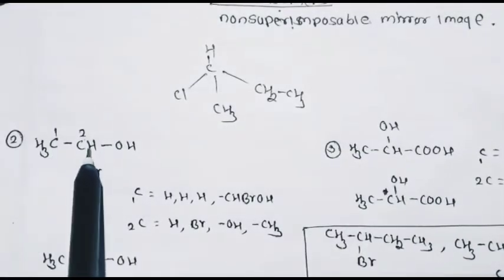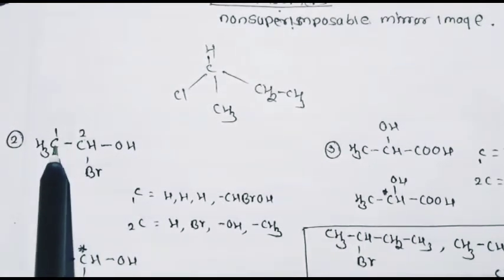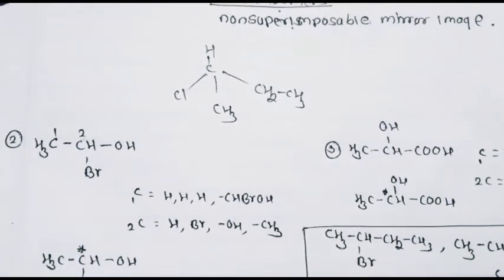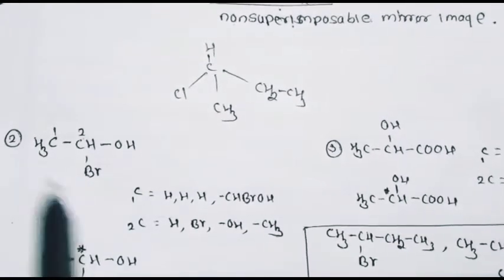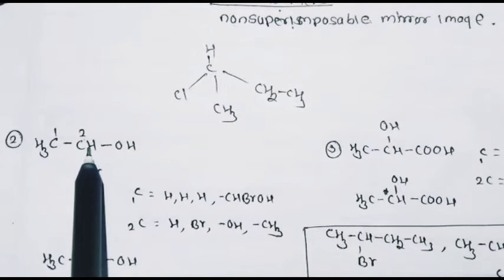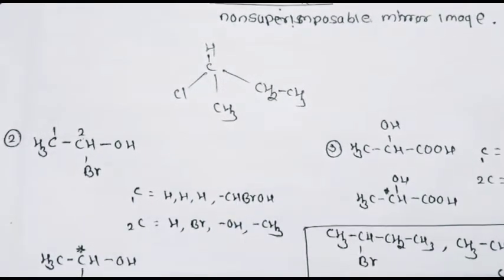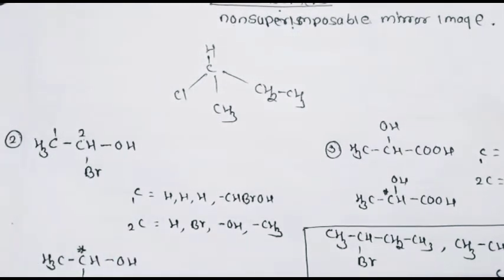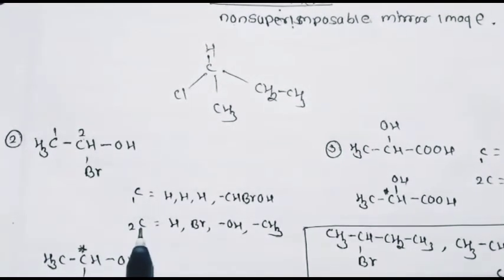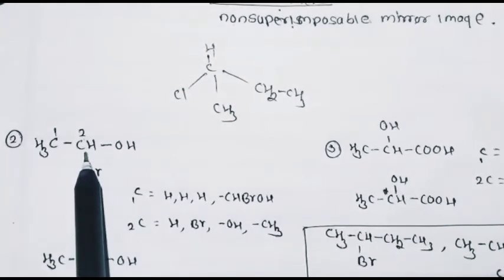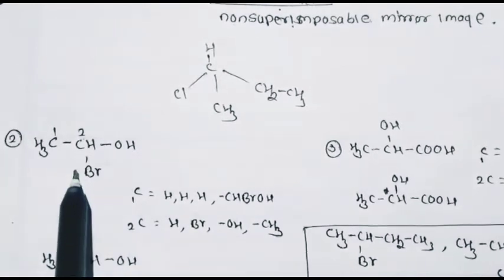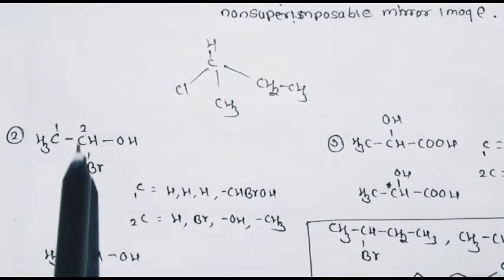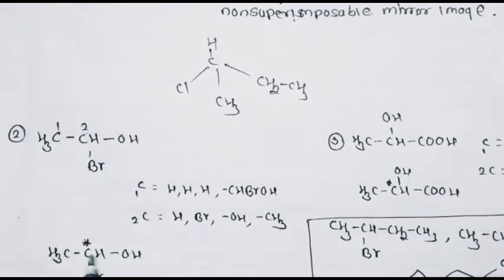Second example: CH3CHOHBR. In this compound there are 2 carbons. Carbon 1 is attached to 3 hydrogen atoms and the group CHBROH — not chiral. Carbon 2 is attached to hydrogen, bromine, OH, and CH3 — four different groups. Therefore, carbon number 2 in this structure is a chiral carbon, also called an asymmetrical carbon atom, denoted by the asterisk symbol.